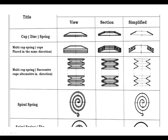Hello everyone. In the previous lecture of Mechanical Working Drawing (MWM), we covered most of unit number three — conventional representation — how to give conventional representation for different materials, different objects, and different components of a machine. Now, the next part covers different springs like spiral spring, cup spring, and how to represent all these things.